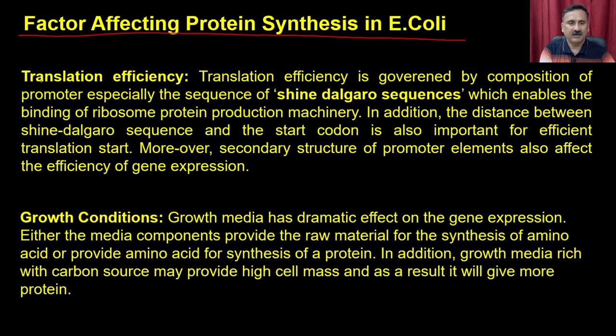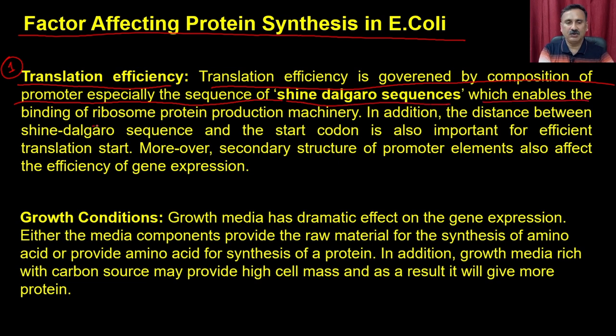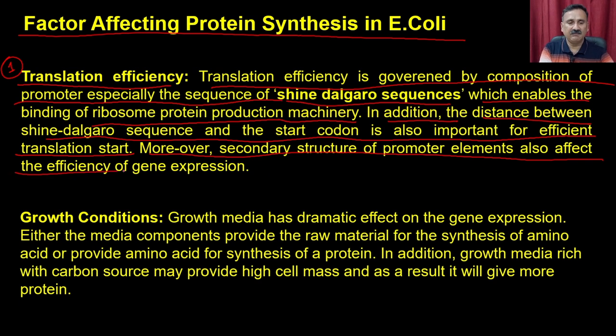In this demo clip we have discussed the different steps you have to perform and how to check the expression using SDS-PAGE. Now there are many factors which actually decide protein production in the E. coli expression system. The first factor is translational efficiency, which is governed by the composition of the promoter, especially the sequence of the Shine-Dalgarno sequences enabling ribosome binding. The distance between the Shine-Dalgarno sequence and the start codon is also important for efficient translation, and the secondary structure of the promoter elements also affects the efficiency of gene expression.